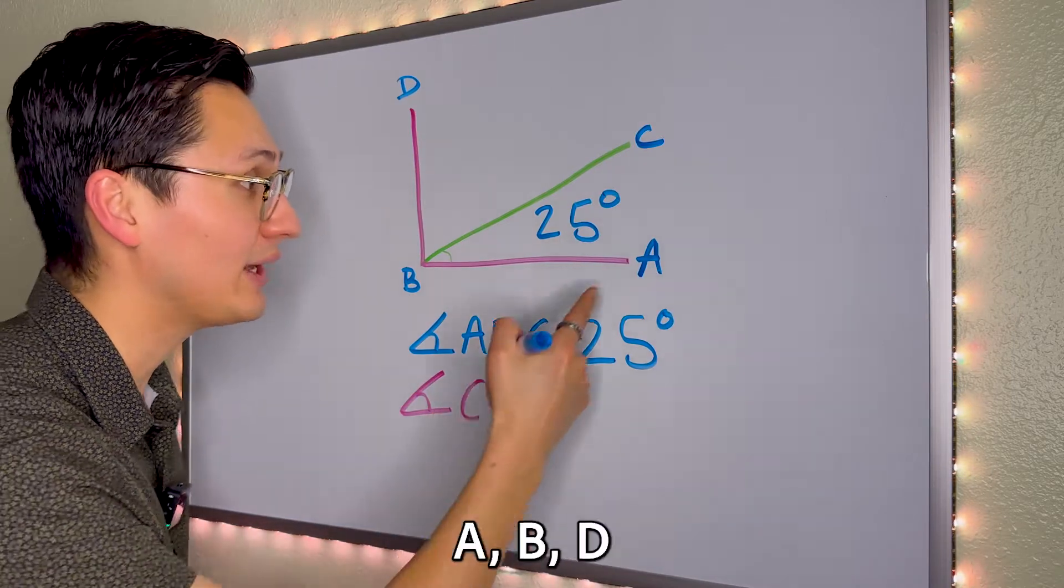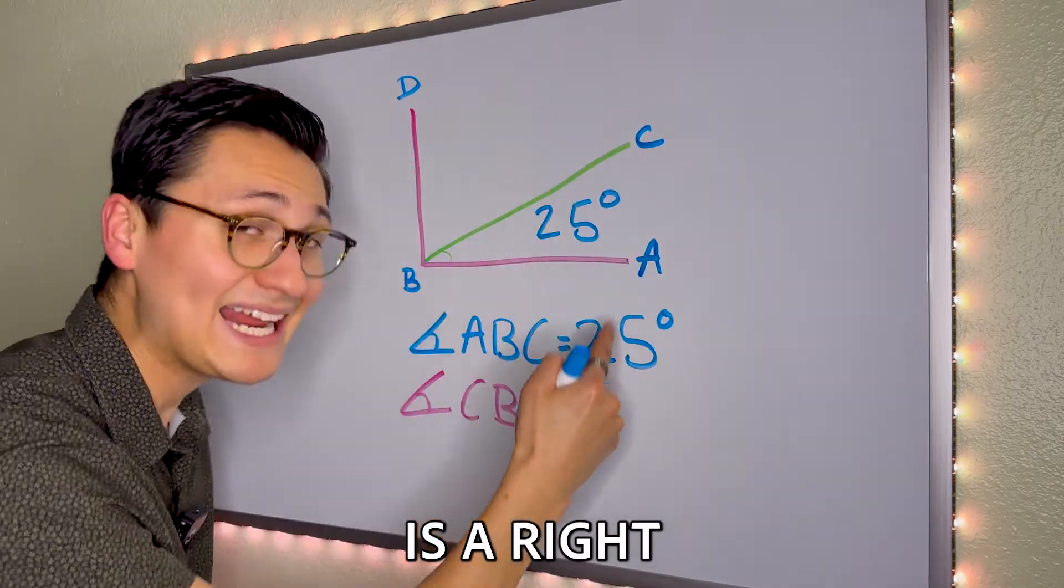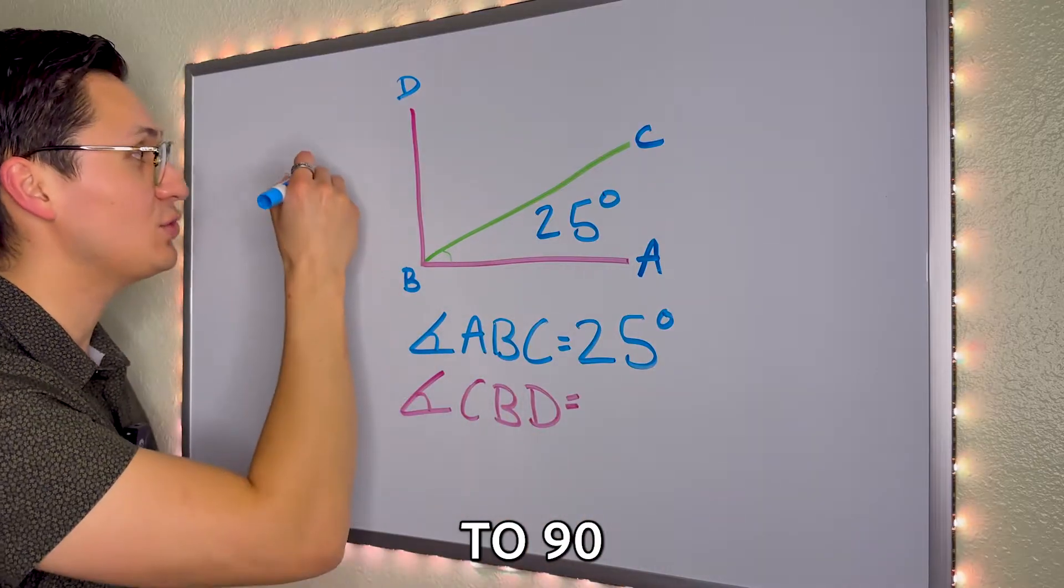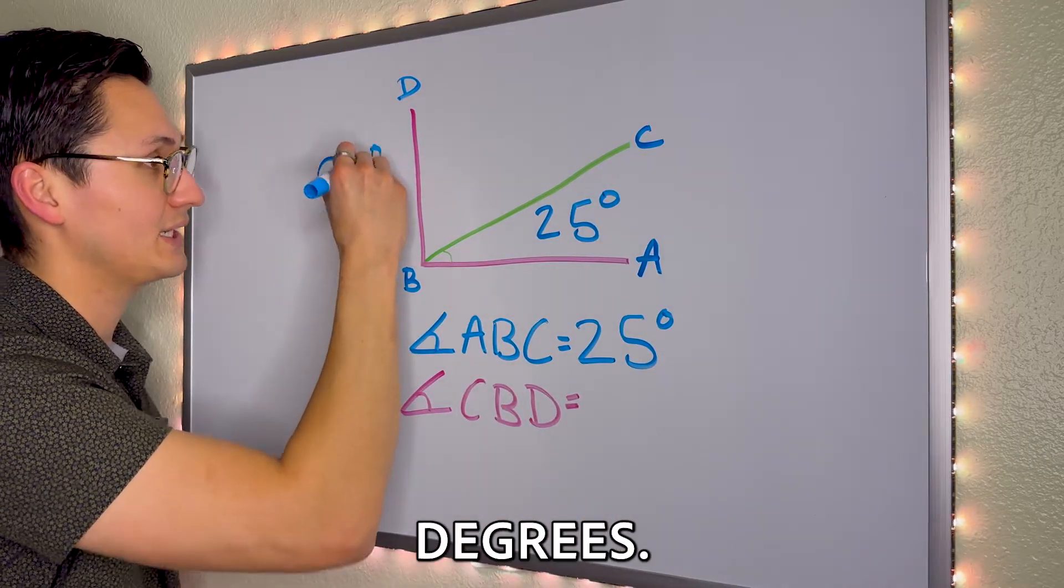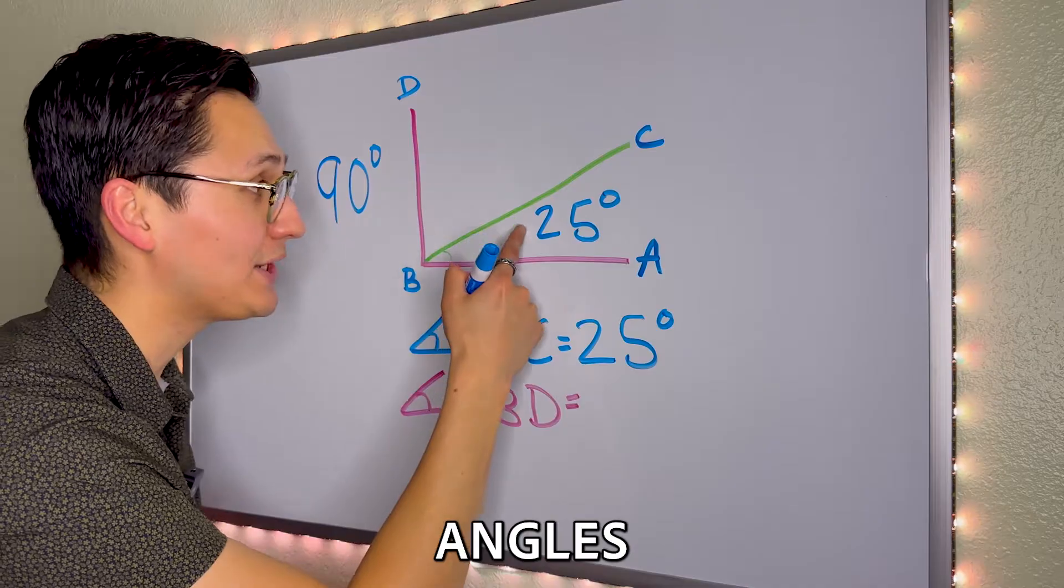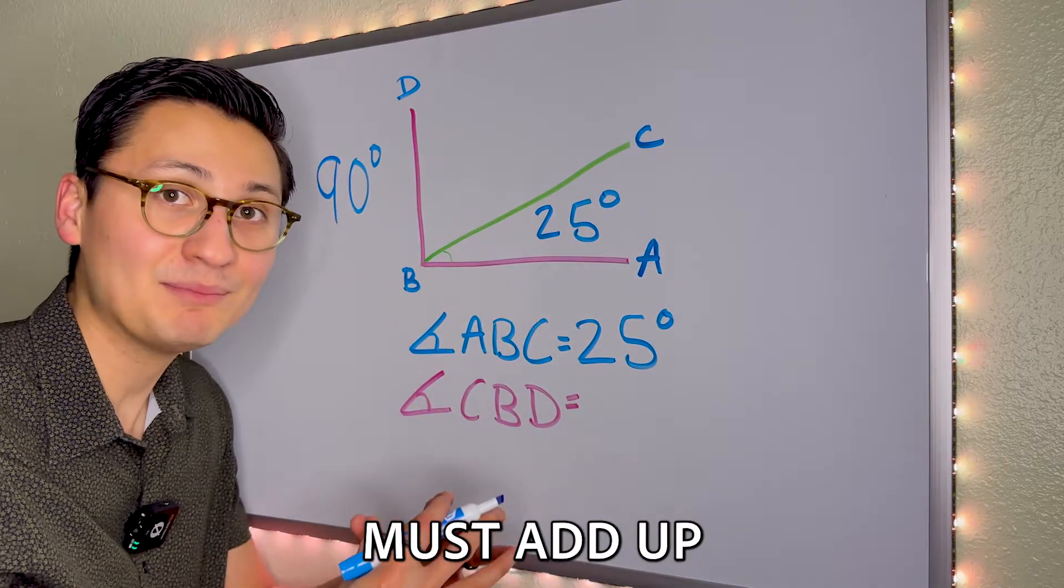So it looks like the angle A, B, D is a right angle. And we know that right angles equal 90 degrees. So we know that these two angles must add up to 90 degrees.